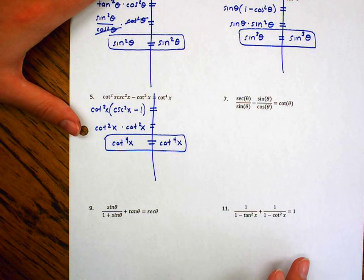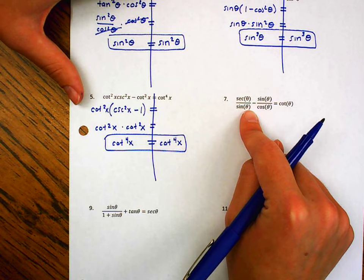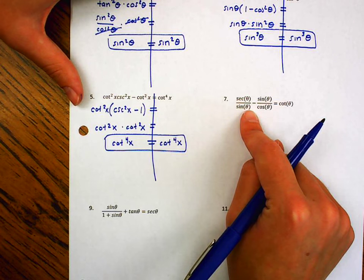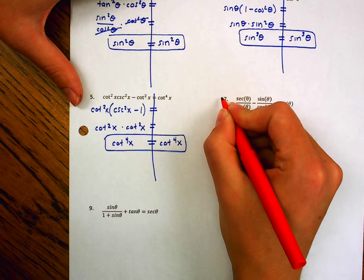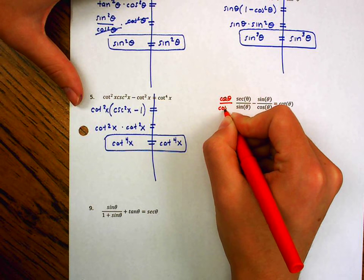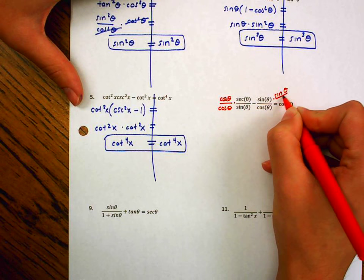It's getting a little more complicated now. Let's look at number seven. As soon as I see fractions, I should be thinking, I need a common denominator. So, I'm going to multiply all of this over here by cosine over cosine.